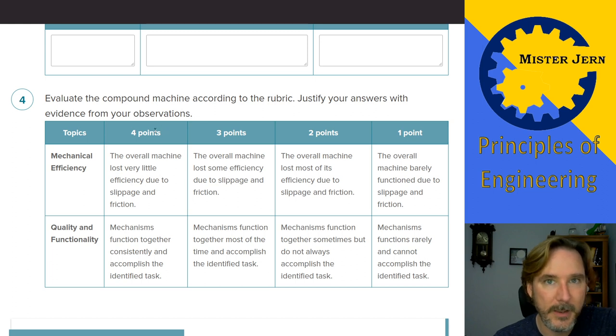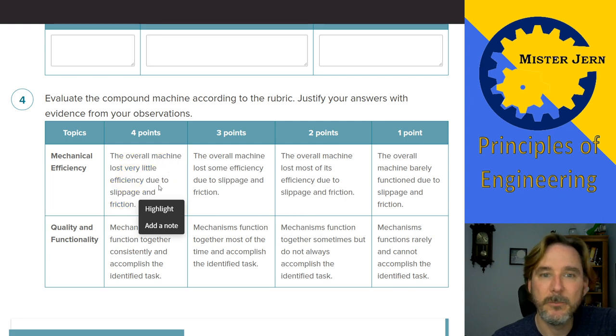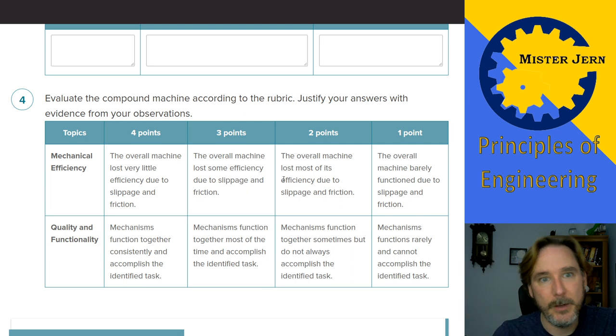So you're going to look at the compound machine that you chose and you're going to talk, you're going to grade its mechanical efficiency using this rubric. Do you think, do you think that machine that somebody else built gets four out of four points, 100% based on this description? Fine. Cool. Explain why. Maybe it only gets three points. Explain. Two points, one point. Okay.